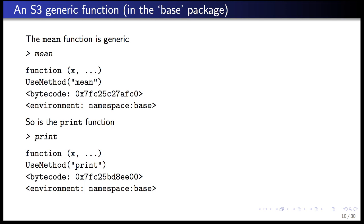The print function is another very important generic function. Lots of things need to be printed, but not everything needs to be printed in exactly the same way, so different data types are printed in slightly different ways. The generic function for print takes a single argument x and dot-dot-dot, then just calls useMethod. The useMethod will identify the class of x and call the appropriate print method.